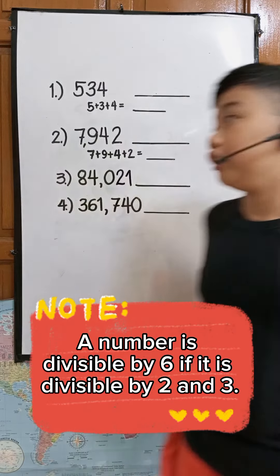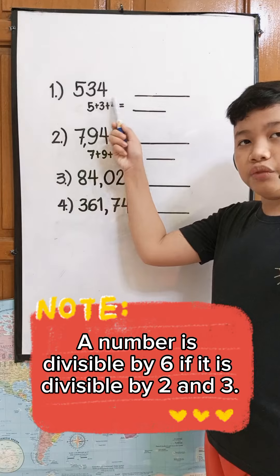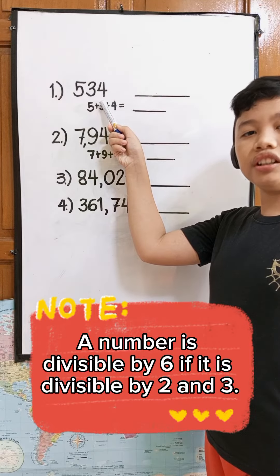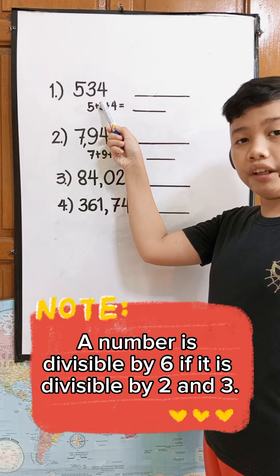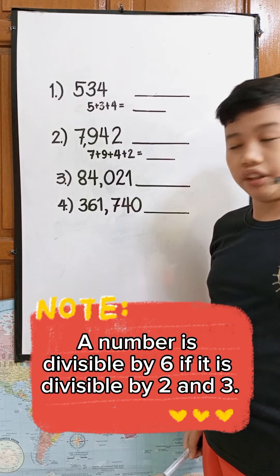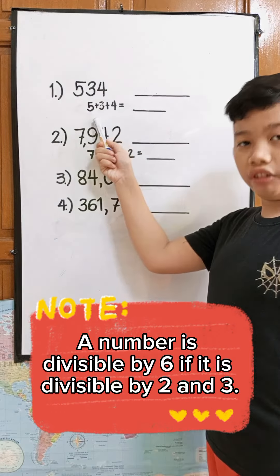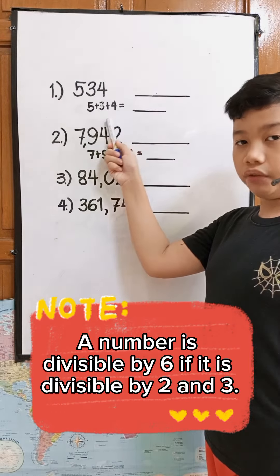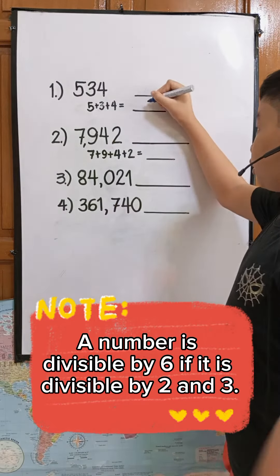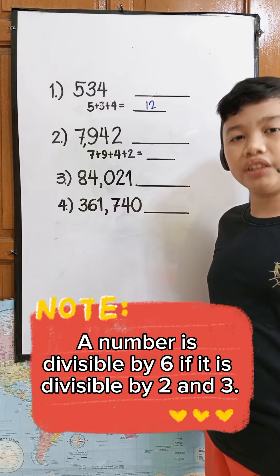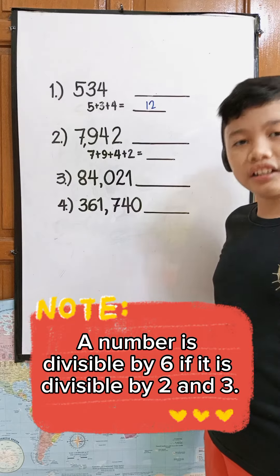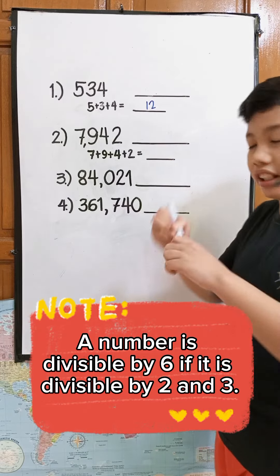Number 1. The ones digit is 4, and 4 is an even number, so it is divisible by 2. Now let us check if it's divisible by 3. 5 plus 3 equals 8, plus 4 equals 12, and 12 is divisible by 3. Since it is divisible by both 2 and 3, it is divisible by 6.